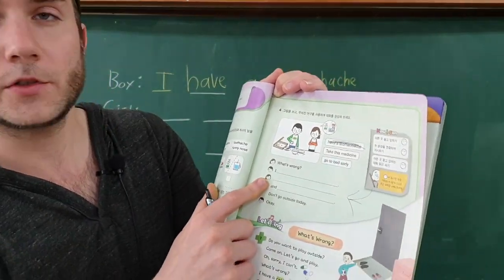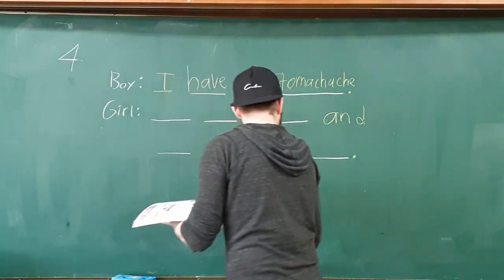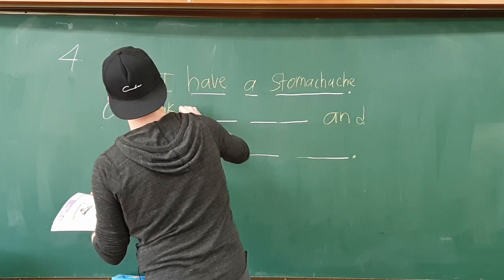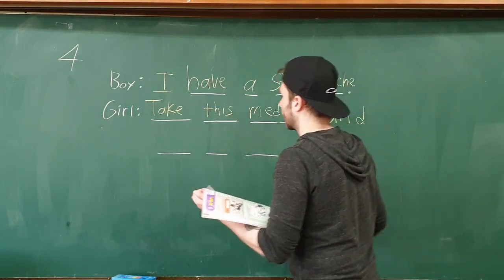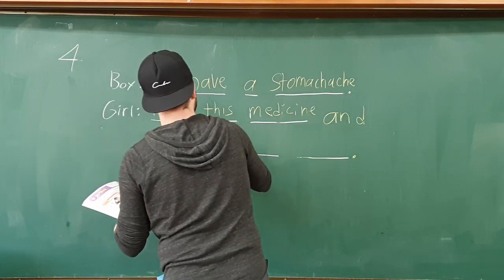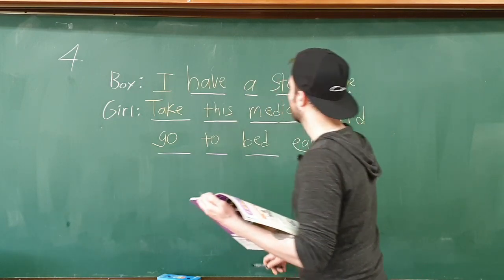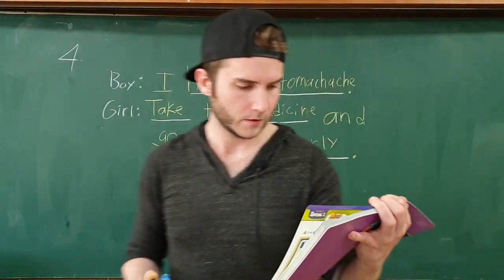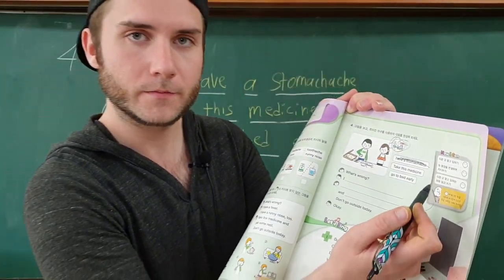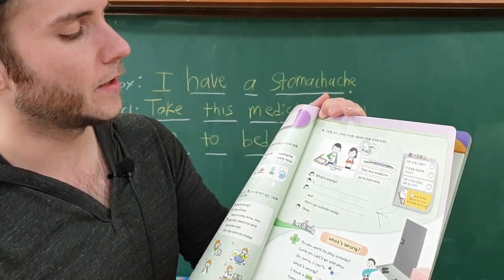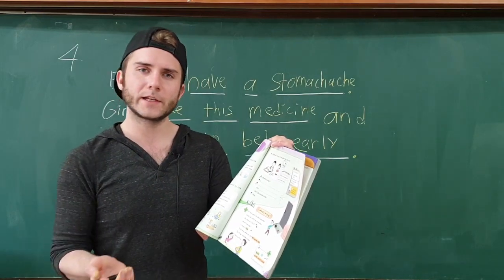Next she says what should he do, so we check out the picture. She's going to say 'take this medicine and go to bed early.' We've got medicine and we've got a bed, and the clock says eight o'clock — just like before, eight PM, that's pretty early. So she's telling him to take this medicine and go to bed early.